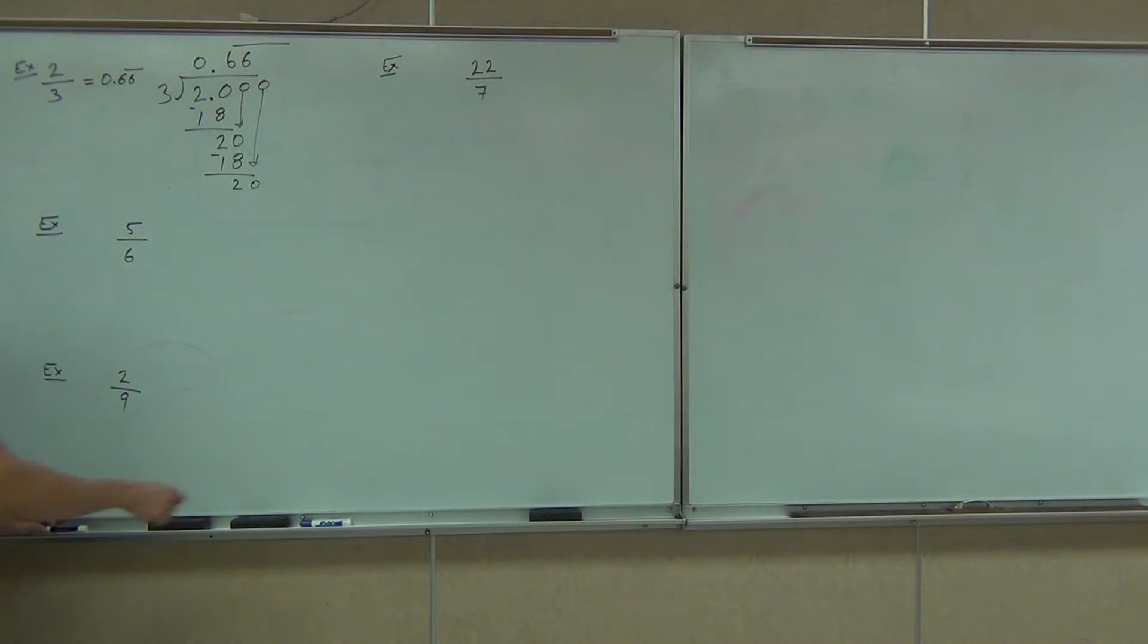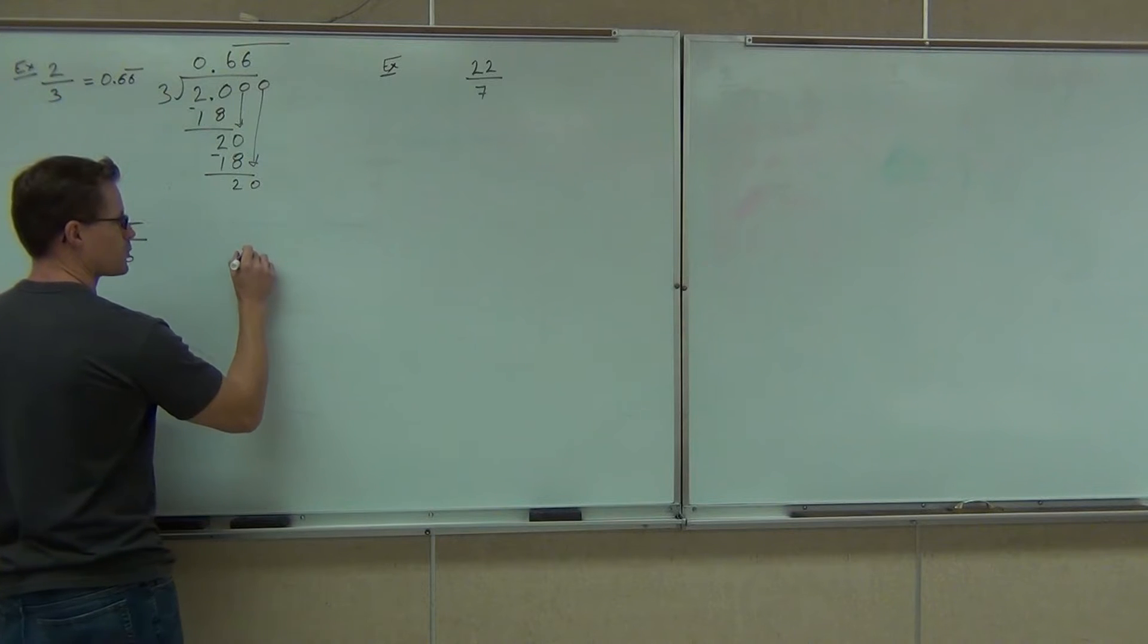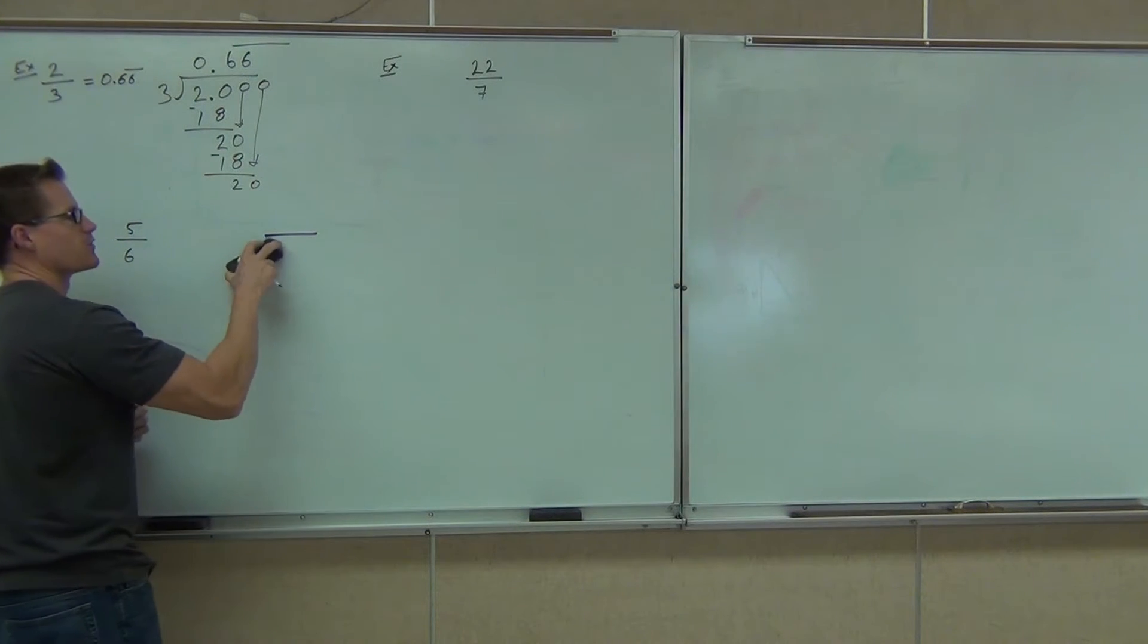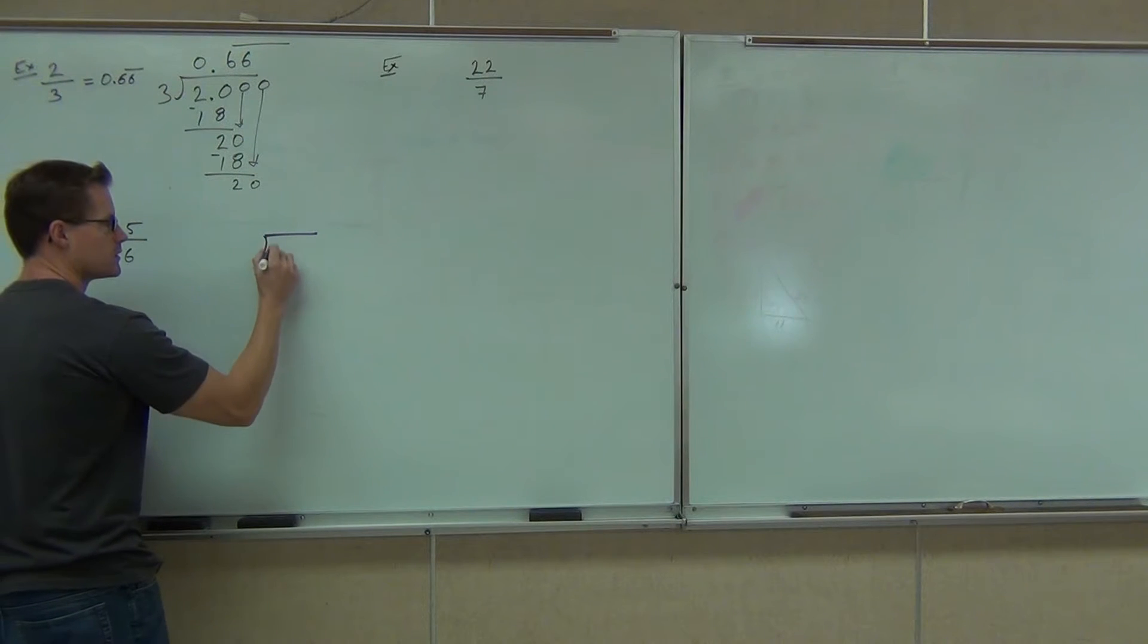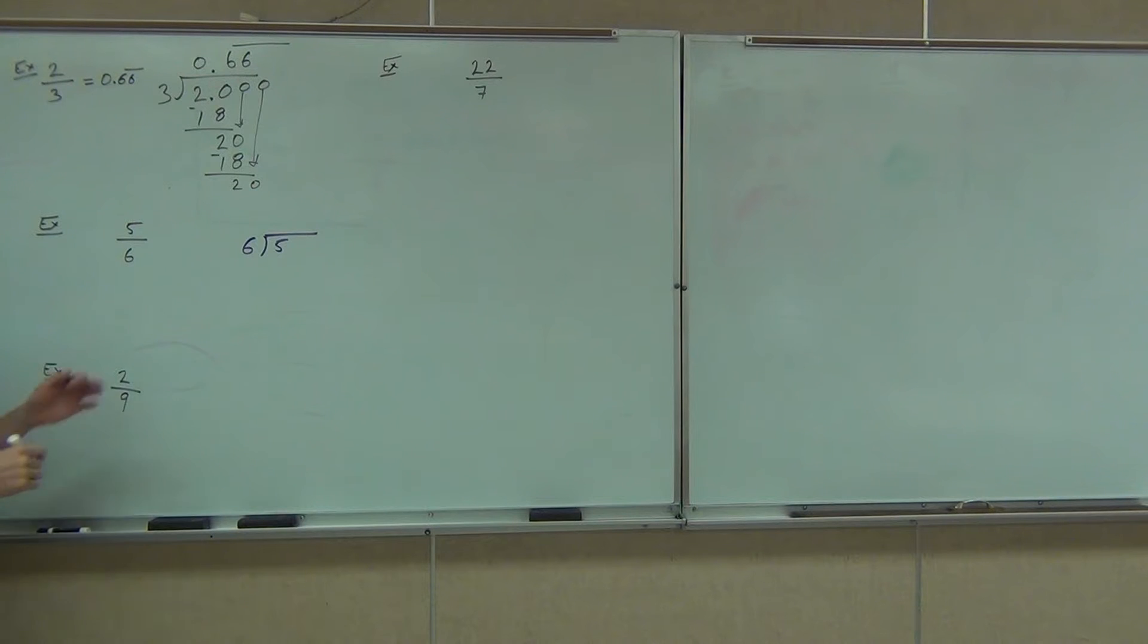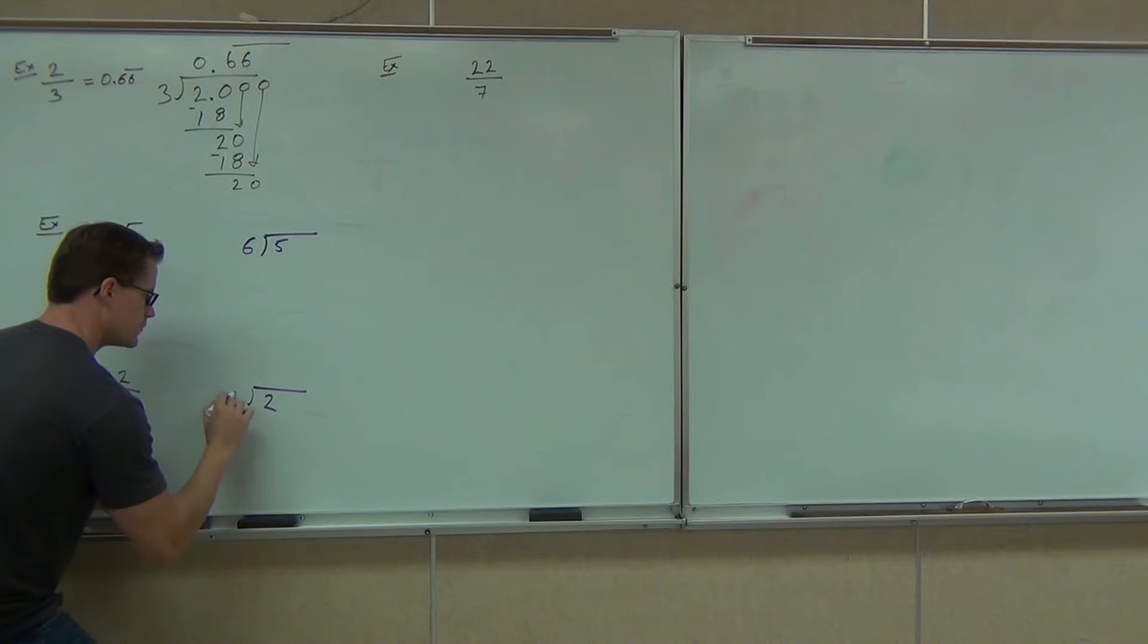So five-sixths and two-ninths. For our five-sixths, if you're working on it right now, what goes on the inside of our symbol, the five or the six? Good, because it means five divided by six.